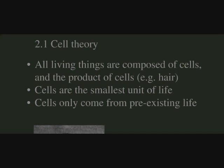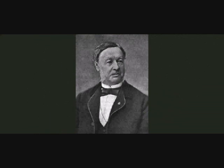Cell theory is made of three main tenets: all living things are composed of cells and the products of cells — for example, hair, which is made of the protein keratin. Cells are the smallest unit of life. And finally, cells only come from pre-existing life. This is a picture of Theodore Schwann, who contributed to the cell theory that we study today in modern times.